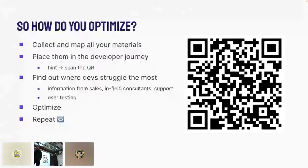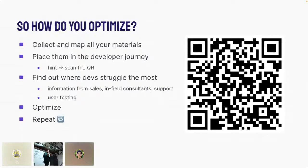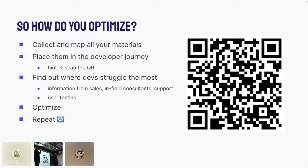We've spoken about what developer journey is — now let's talk about how you can actually optimize it. The very first step is to map out all the resources you have: getting started guides, tutorials, guides, SDKs, the state of SDKs, READMEs, changelogs — everything that was in the map. Secondly, place them in the developer journey and find out whether the quality fits the desired level.